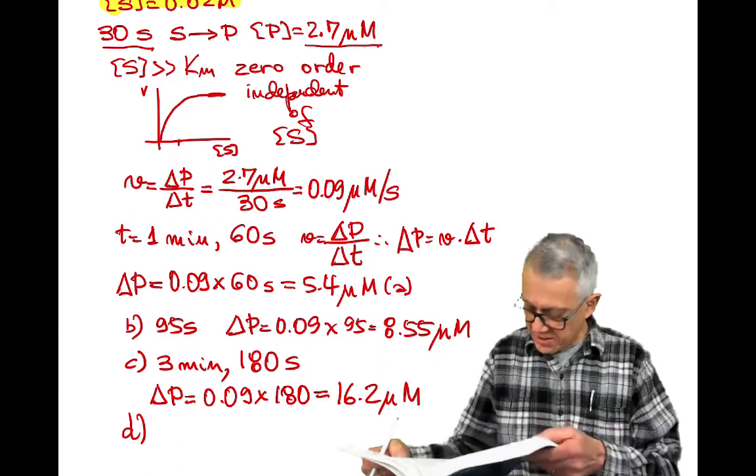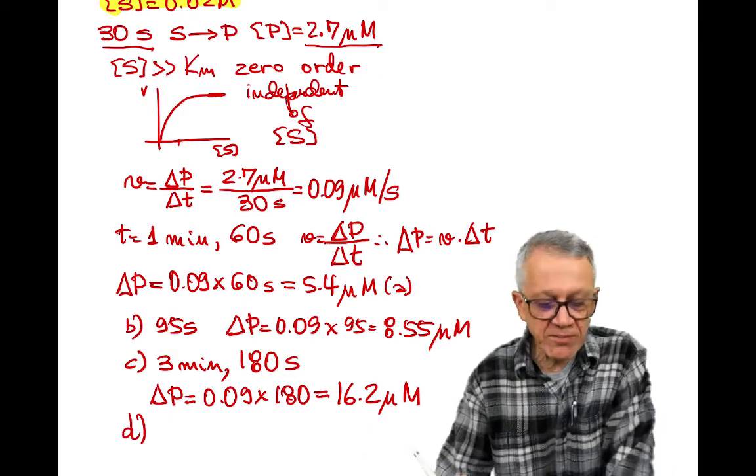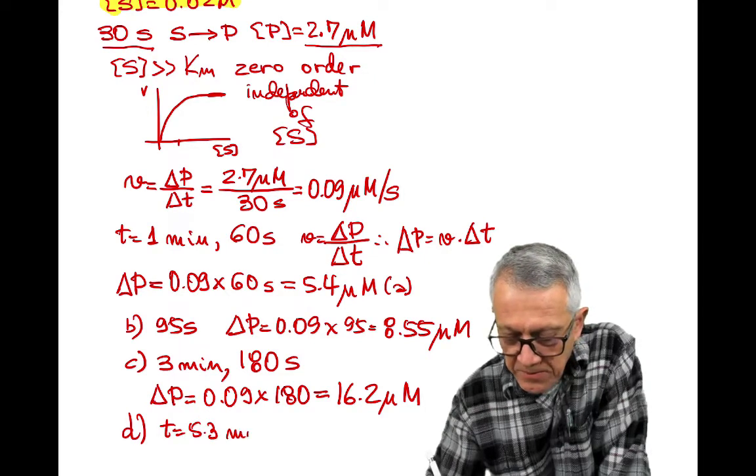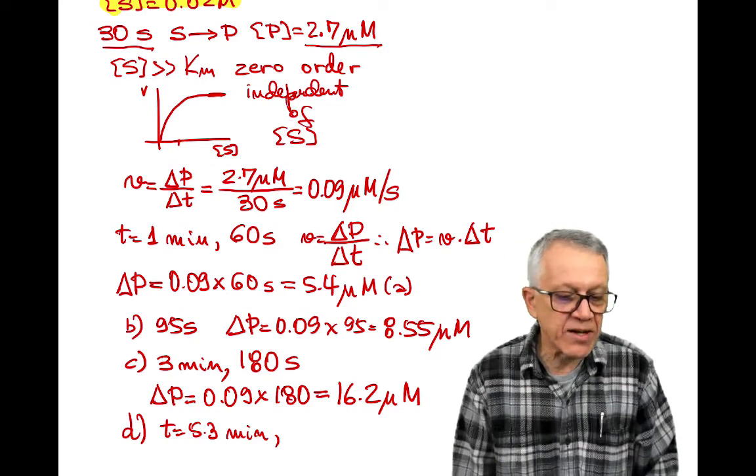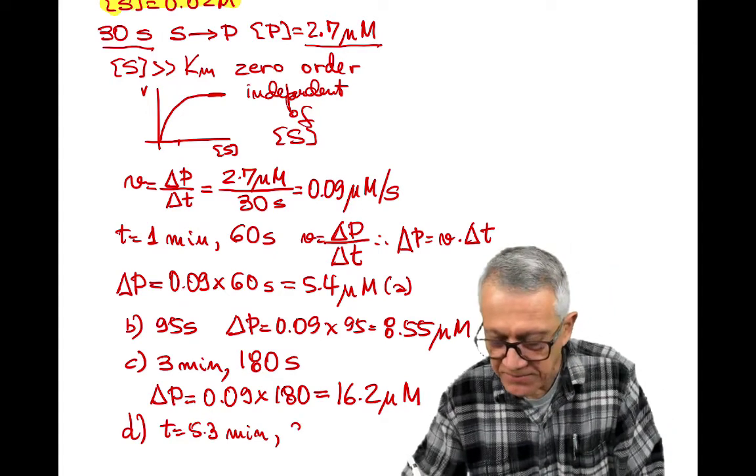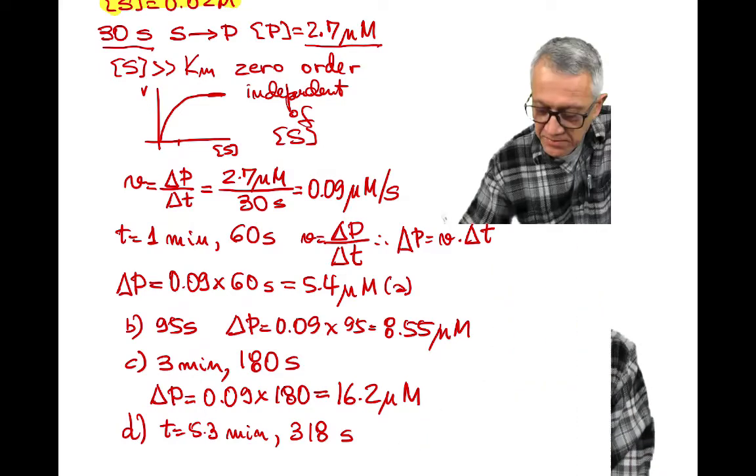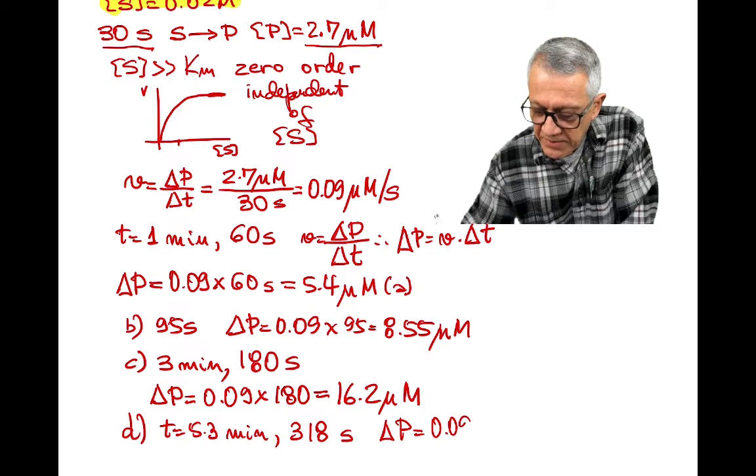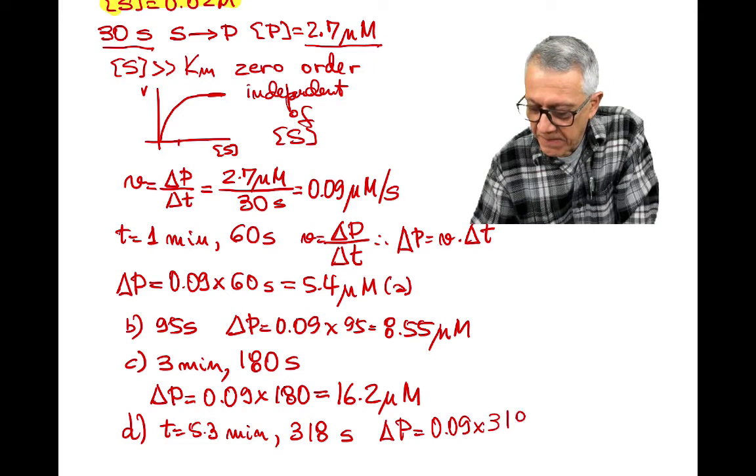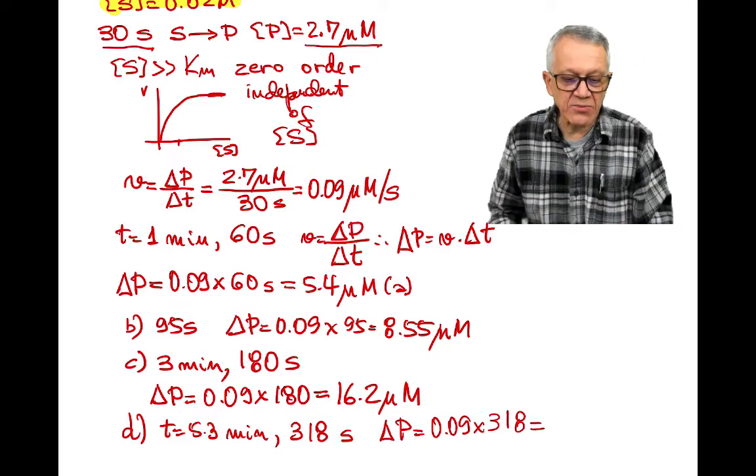So D is asking for 5.3 minutes. We will first of all multiply this by 60 to get in seconds. 5.3 times 60 is going to be 318 seconds. Then we have the same formula, 0.09 times 318. So it's going to be 28.6 micromolar.